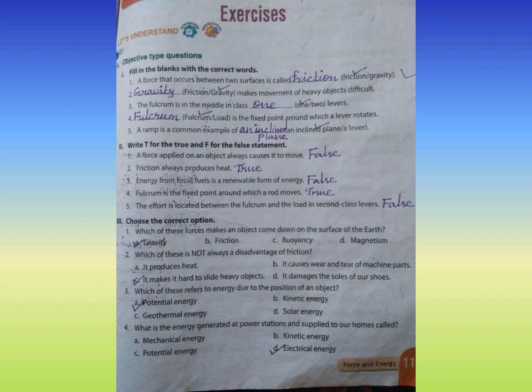Number three: Which of these refers to energy due to the position of an object? Answer A, potential energy. Number four: What is the energy generated at power stations and supplied to our homes called? Answer D, electrical energy. Next page.